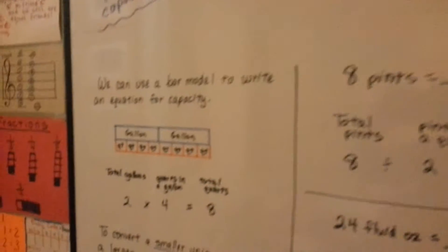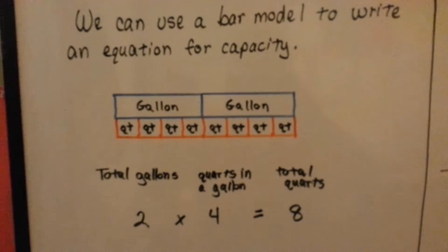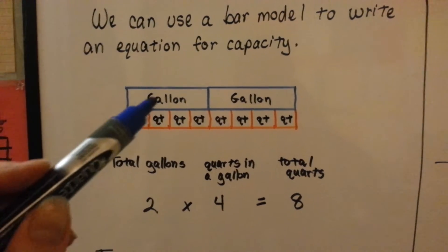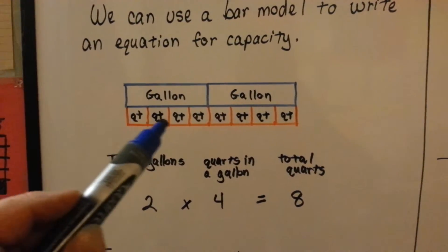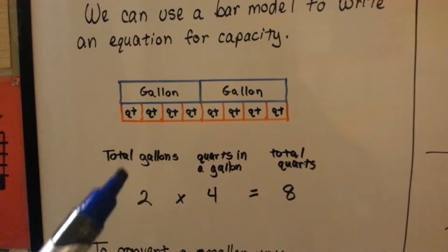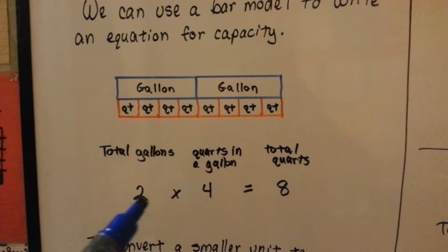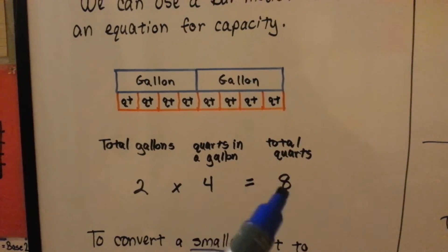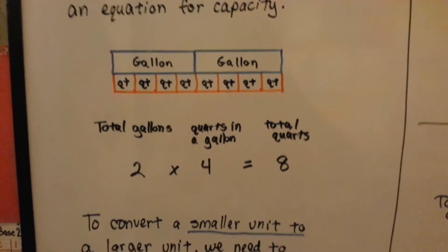We can use a bar model to write an equation for capacity. If there are four quarts in a gallon, we can put two bars for the gallons and line up the quart ones underneath. Then we can write the equation: 2, which is the total gallons, times 4, which is the quarts in a gallon, equals 8 total quarts. The models help us see it very easily.